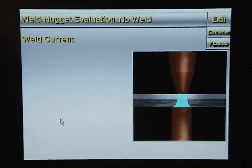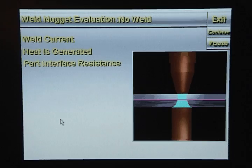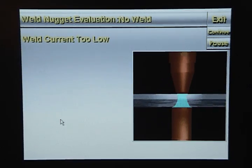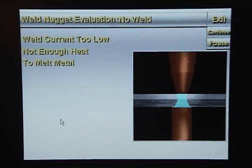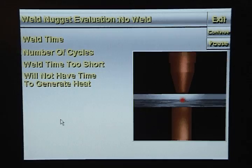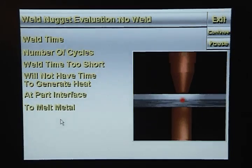When weld current flows to the metal stack-up, heat is generated by the part interface resistance and the weld tip interface resistance. If the weld current is too low, not enough heat will be generated at the part interface to melt any metal. Weld time is the number of cycles that weld current flows. If the weld time is too short, the weld current will not have the time to generate enough heat at the part interface to melt any metal.